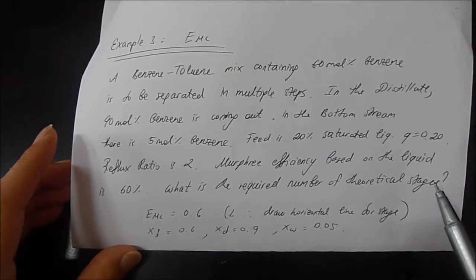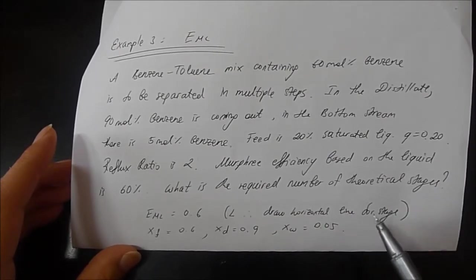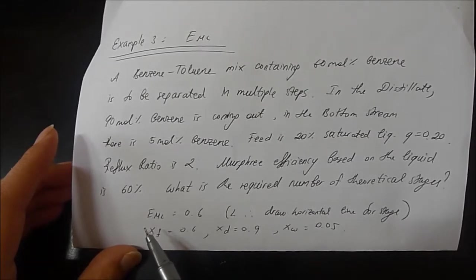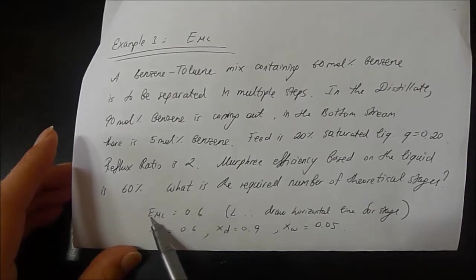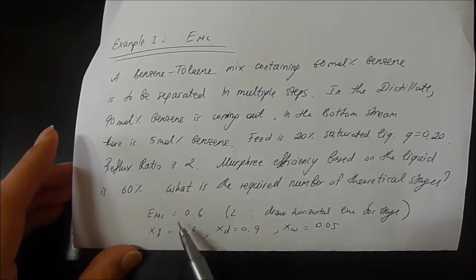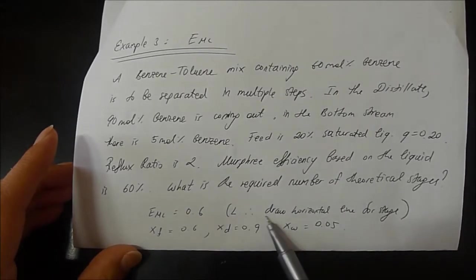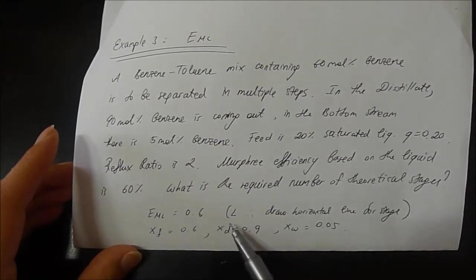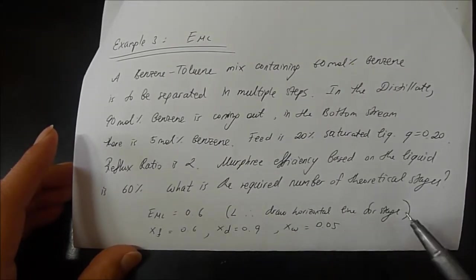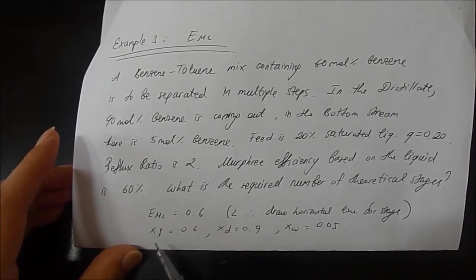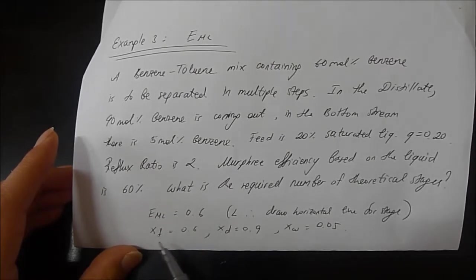For Murphy efficiency based on the liquid, we write EML efficiency for the liquid equals 0.6. For the liquid, we have a little bit different method than the vapor. So in our terms we have to write...